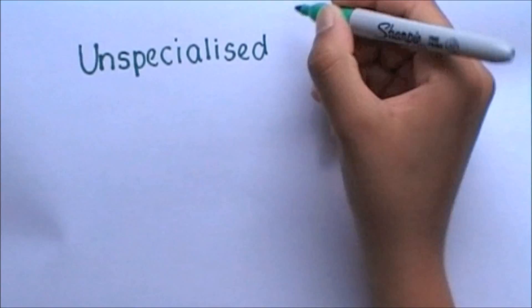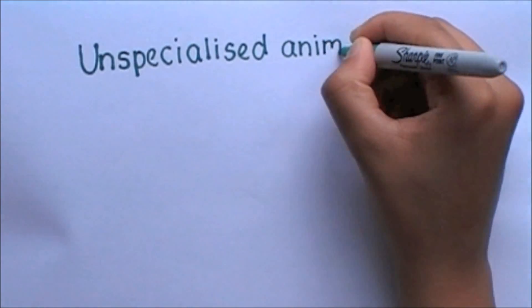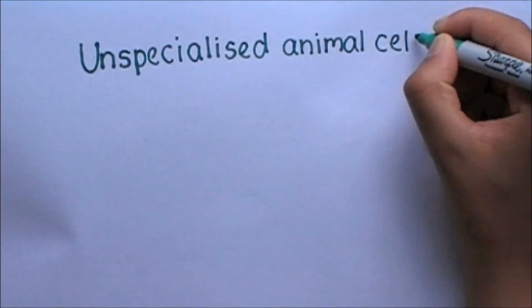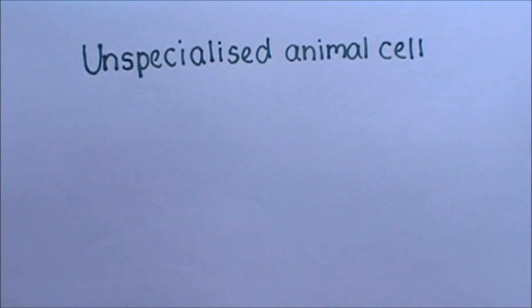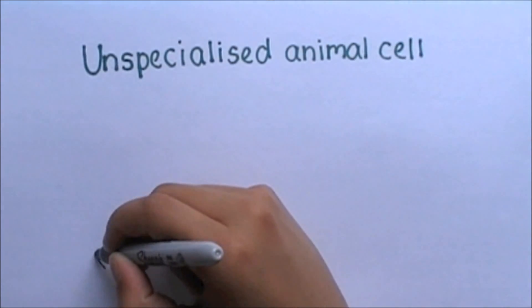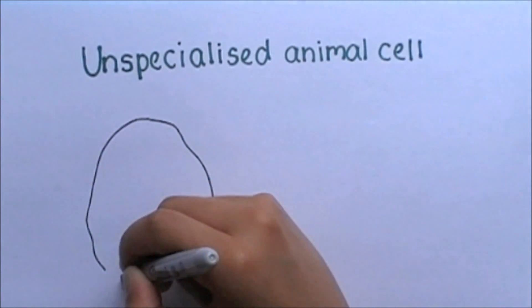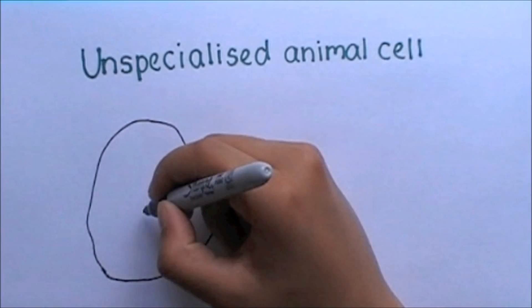A great way to remember important facts and diagrams in biology is by visualizing them. Here is a diagram of an unspecialized animal cell which has commonly identifiable features, as I shall shortly be labeling.